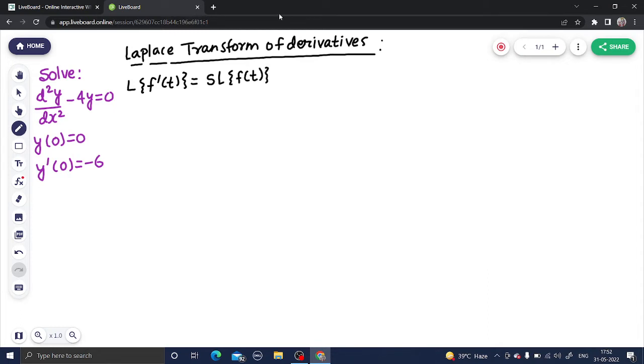Second term onwards, terms will be negative. And in all the further terms, start decreasing the power of s. So s power 0 will be here, which is of course 1. Second term is always f(0). This was for the Laplace of f'(t), and we'll stop when we get s power 0.